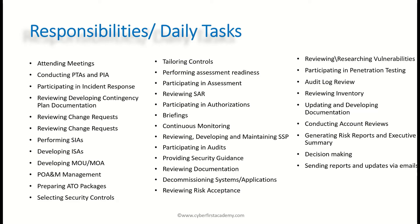Developing ISAs — Interconnection Security Agreements. If system A is going to be connecting with system B, you need to define what security protections are in place and what security agreements and arrangements exist between the two. MOU and MOA — Memorandum of Understanding and Memorandum of Agreement — are similar to an ISA. It's about having something documented covering your rules of engagement: this is what we agree to when dealing with a particular situation.